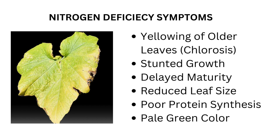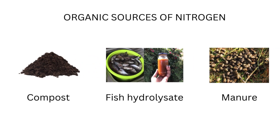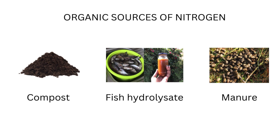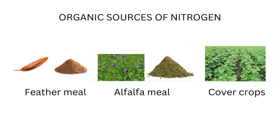Some of the organic sources of nitrogen-rich fertilizers are compost, fish hydrolysis fertilizer — I have made a video on how to make your own fish hydrolysis fertilizer — and well-decomposed animal manure. We also have feather meal; yes, there is a fertilizer that is just made out of feathers. We also have alfalfa meal, and we can also plant cover crops like legumes that are able to fix atmospheric nitrogen.